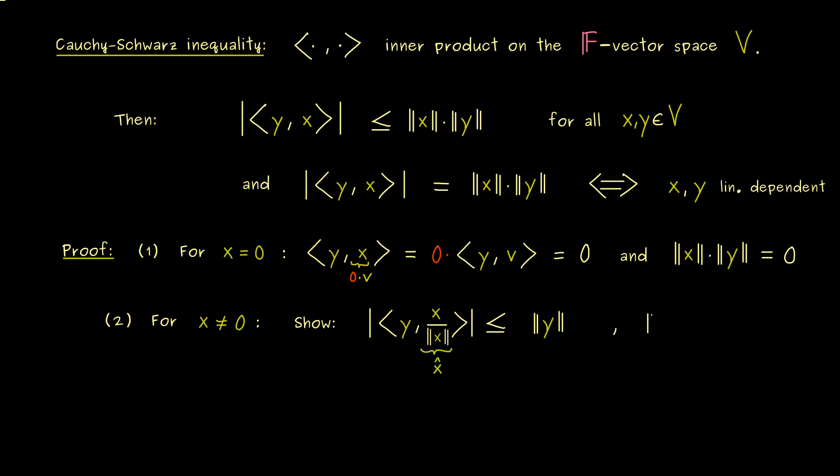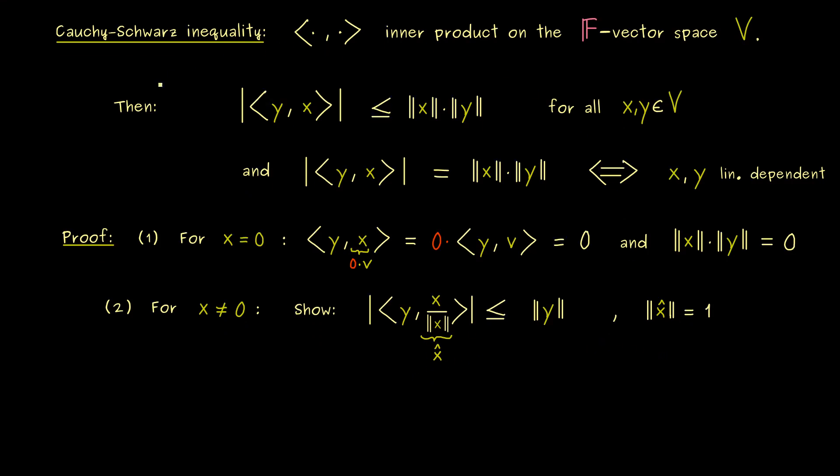And now it's important to note that the norm of x hat is equal to 1. So that's an easy calculation one can simply do. In other words, if we can show the Cauchy-Schwarz inequality for vectors x with norm 1, we have shown the general form as well.